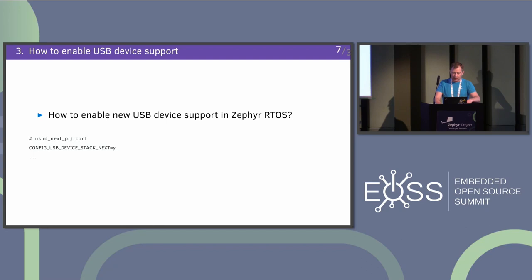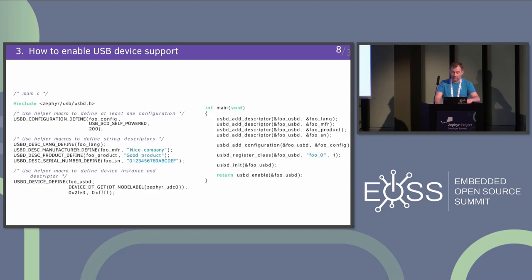The difference with the new stack is that we don't have as many Kconfig options — it's just one: enable device stack. Everything to configure, like PID and vendor ID, needs to be done by the application. The reason for that is that you can disable your USB device, reconfigure vendor ID or product ID, and restart it. You can also change other properties from the USB device descriptor and also class registration — you can remove a CDC-ACM instance, then register another class and power up the USB device again.